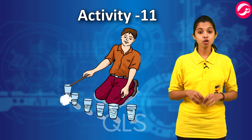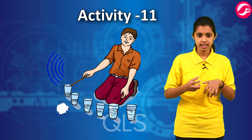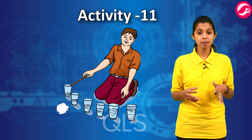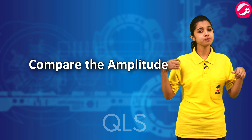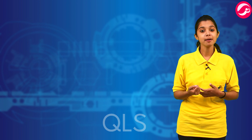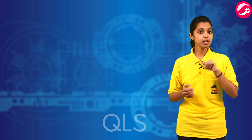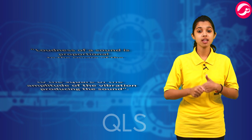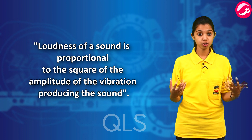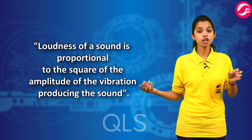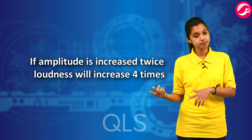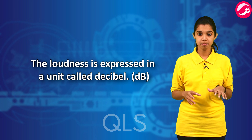In which case is the amplitude larger? Obviously, when we strike harder, the amplitude increases. Loudness of a sound is proportional to the square of the amplitude of the vibration producing the sound. If the amplitude is increased twice, its loudness will increase 4 times. The loudness is expressed in a unit called decibel, that is dB.